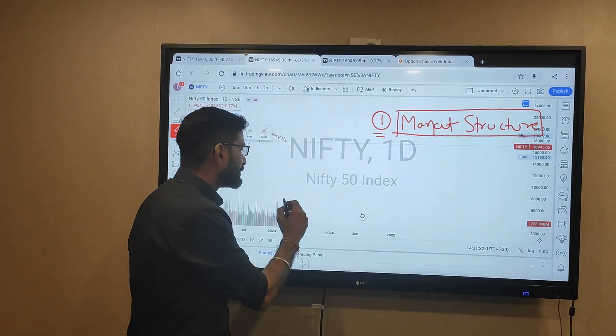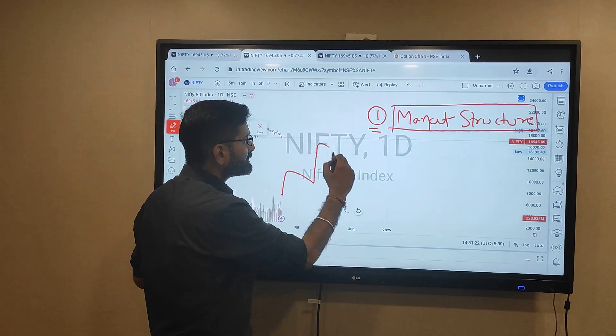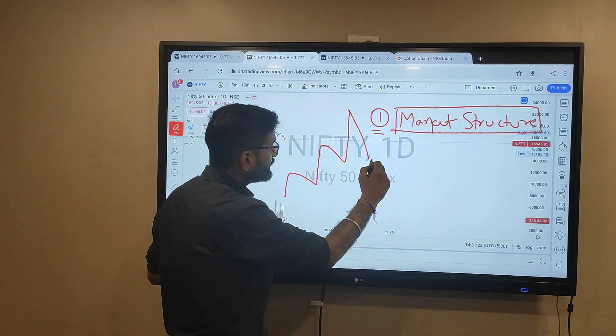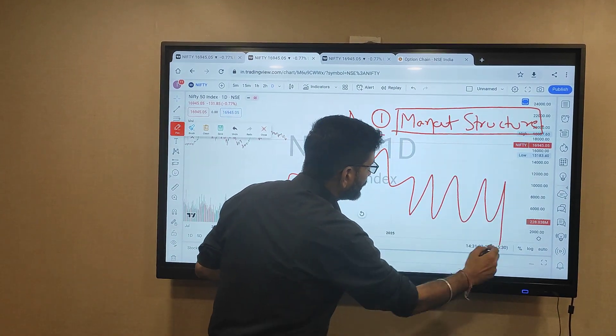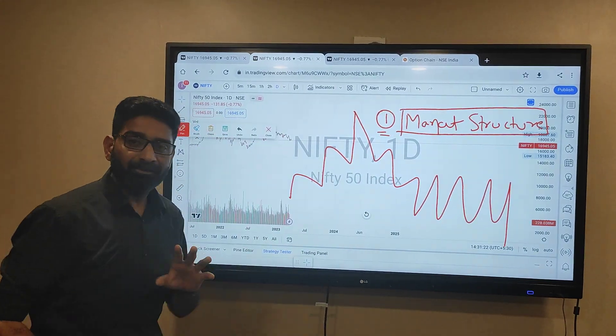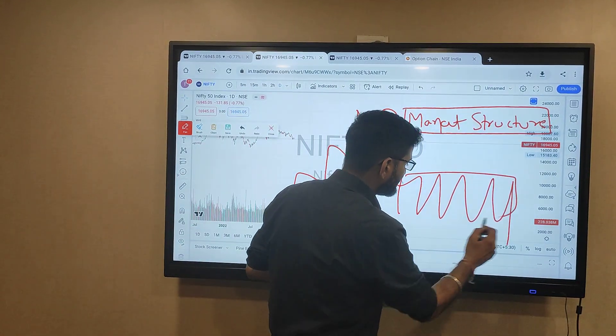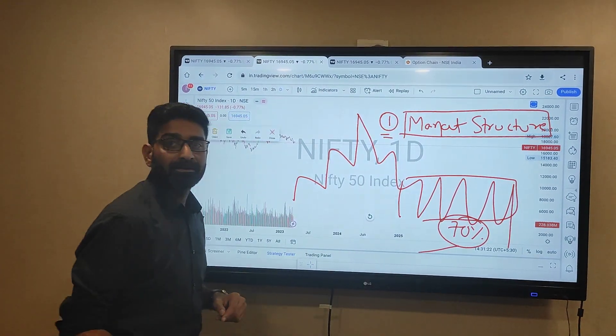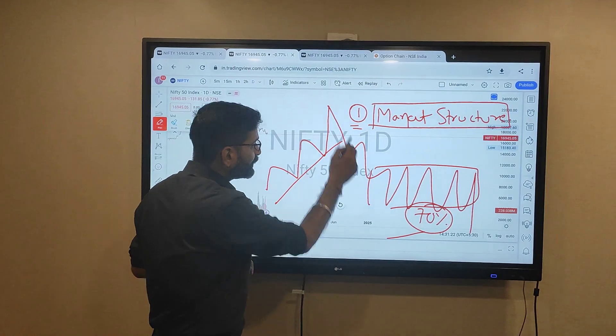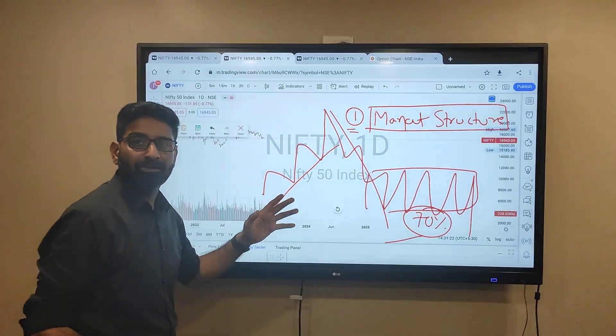Structure of the market is three types. Market is in uptrend, market is in downtrend, or it's in sideways. The market is 70% of the time - intraday or anytime you check - 70% of the time market is in sideways. Uptrend and downtrend 30-35% of the data.